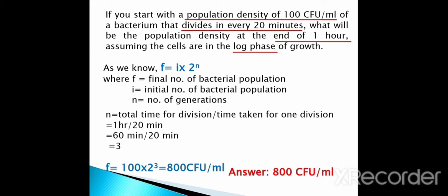If you remember this formula and you know the initial number of bacteria, the generation time, and the number of generations of a bacterial population, you can easily calculate the final density at a certain period of time. Always remember this formula — it lets you solve any defined question regarding bacterial growth.